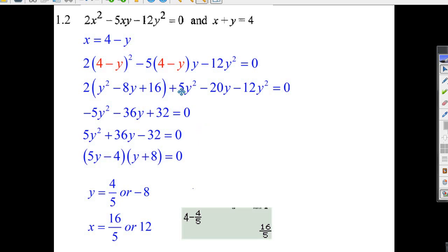Now, let's put together the y squareds. We've got 2y squareds here, 2 times y squared, plus 5y squared is 7y squared. 7 minus 12, minus 5y squared. We're putting together the like terms.